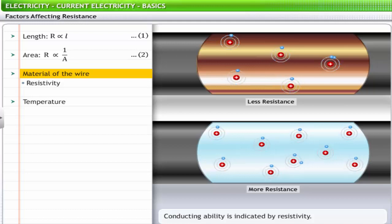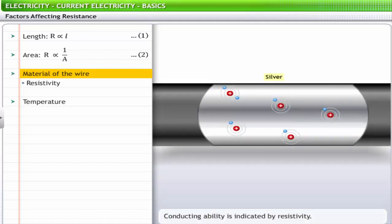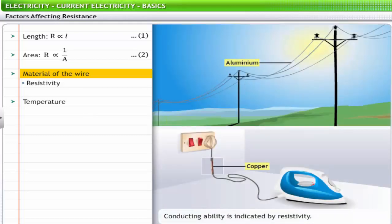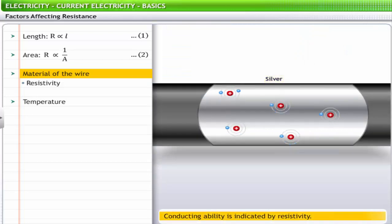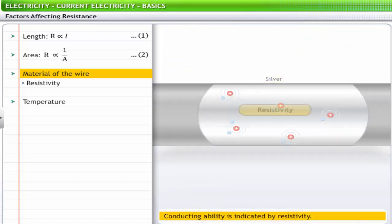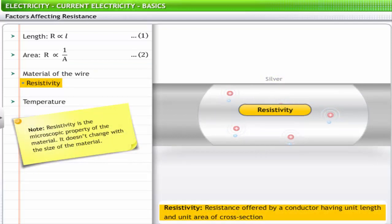The third factor that affects resistance to charge flow is the material that a wire is made of. Some materials are better conductors than others and offer less resistance to the flow of charge. For example, silver is the best conductor. However, silver is never used in wires of household circuits as it is expensive. Copper and aluminum are among the least expensive materials with suitable conducting ability to permit their use in wires of household circuits. The conducting ability of a material is often indicated by its resistivity. Resistivity of a material is the resistance offered by a conductor having unit length and unit area of cross-section. The resistivity of a material depends upon its electronic structure and its temperature.